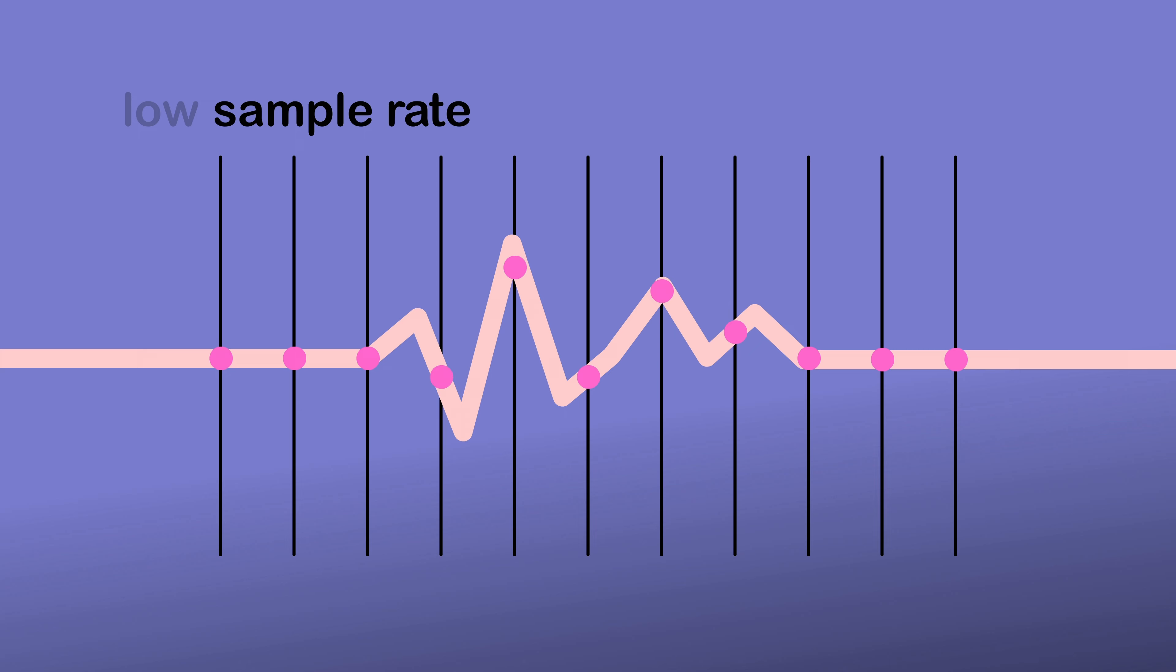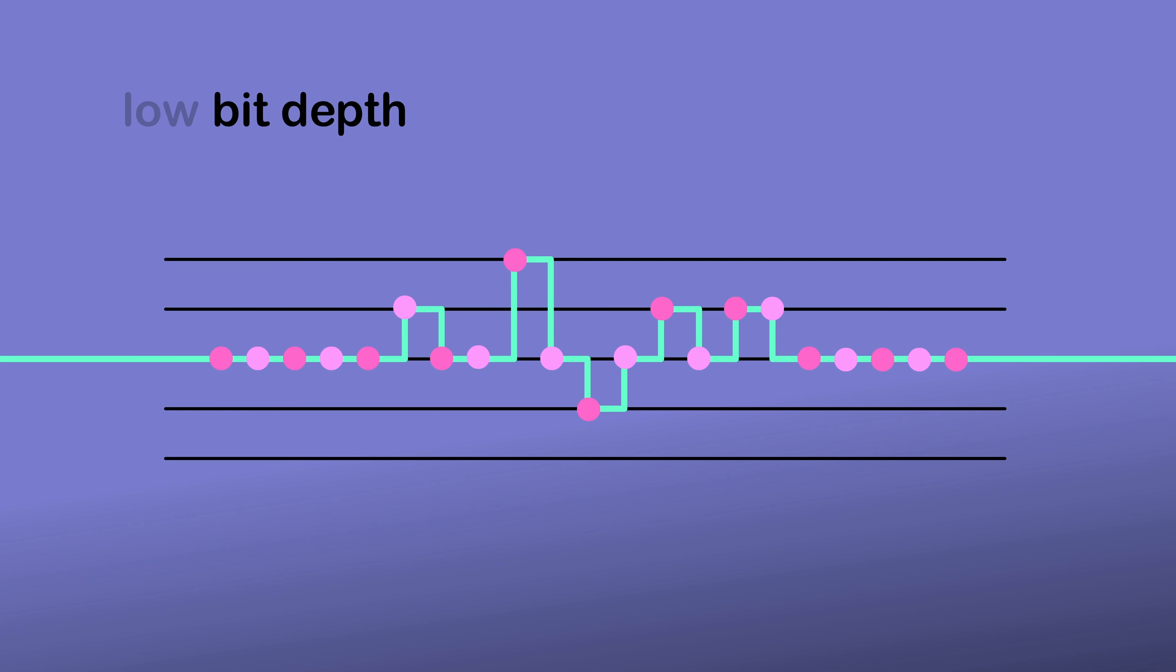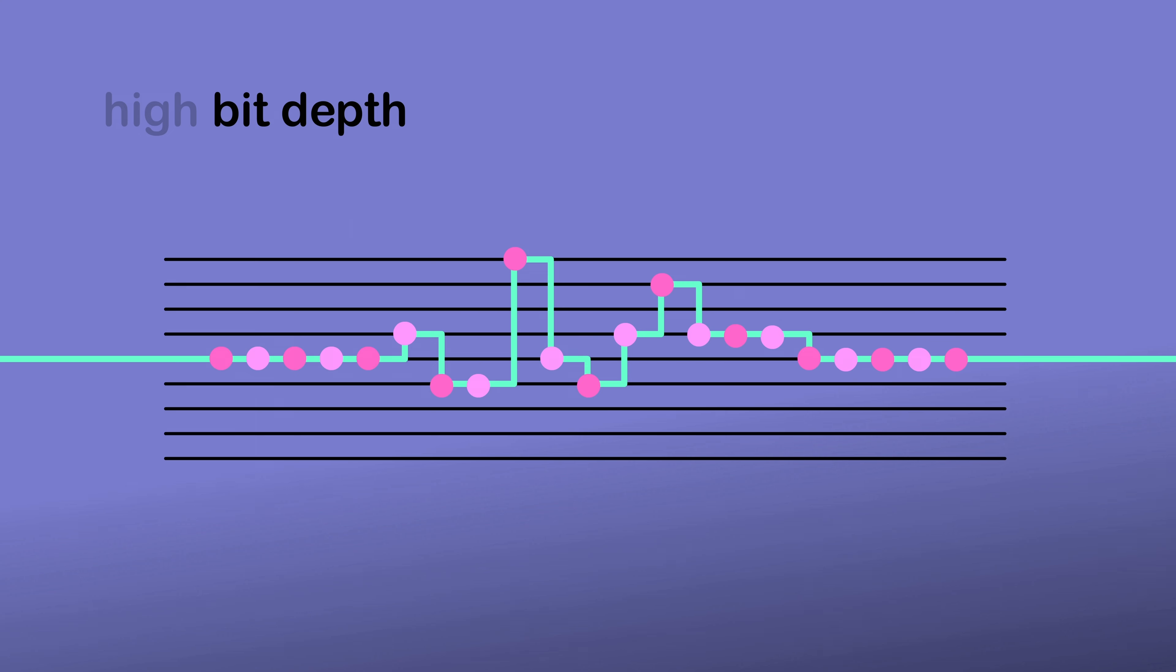The accuracy of this conversion depends on how often it's performed, which is called the sampling rate, and how many values are used to represent the amplitude of the analog signal in the digital domain, which is called the bit depth.